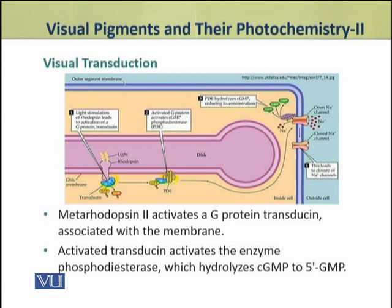Metarhodopsin 2 activates a G protein called transducin in the membrane. This activated transducin activates the enzyme phosphodiesterase. This enzyme hydrolyzes cyclic GMP and converts it into 5' GMP.